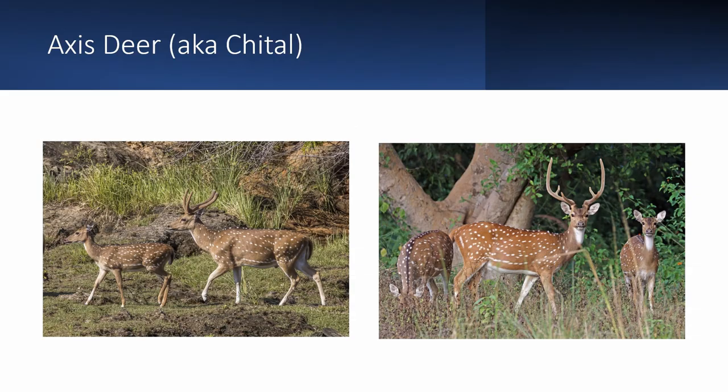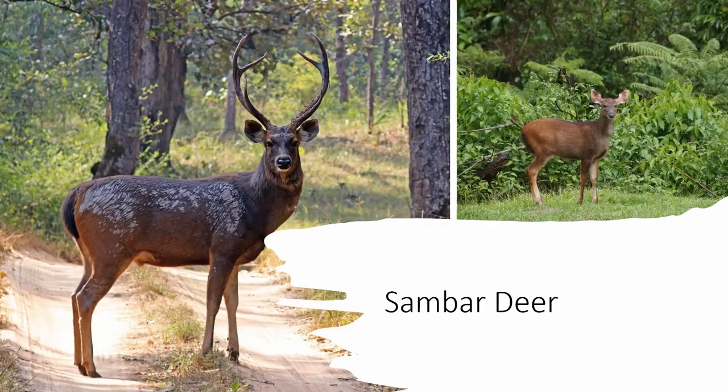The axis deer, or chital, is native to India and has been introduced to North America mostly in Texas, where it's quite abundant, but also in California. It's spotted all year round and is the only one of the three spotted deer species with no black on its rump. The male's antlers are simple, with just one or two forks on them.